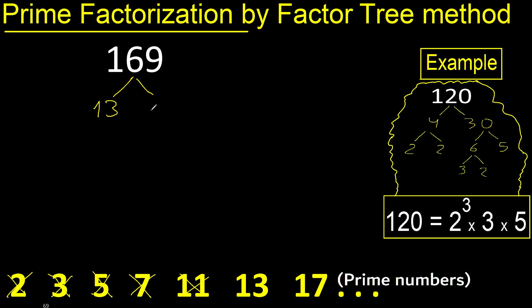169 divided by 13 is 13. OK, 13 multiplied by 13 is 169. 13 is a prime number, so we're finished.